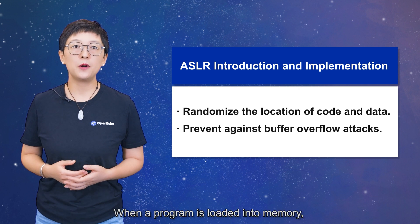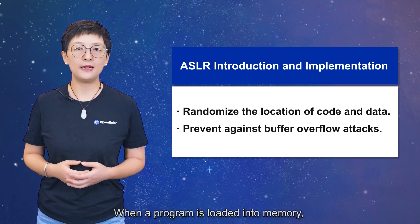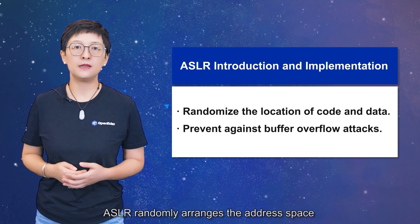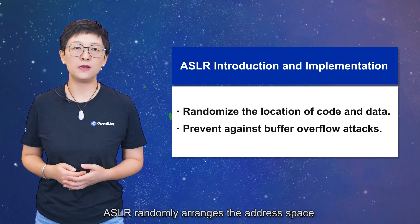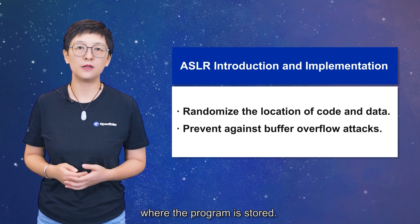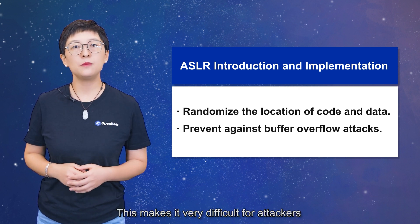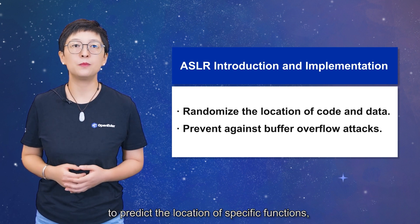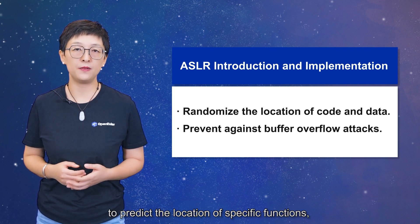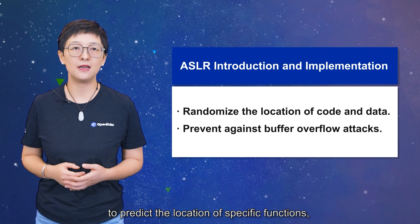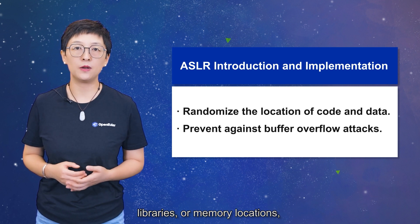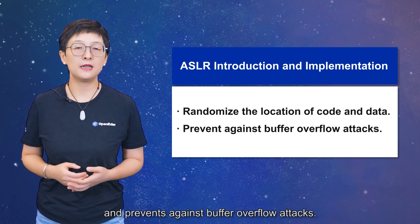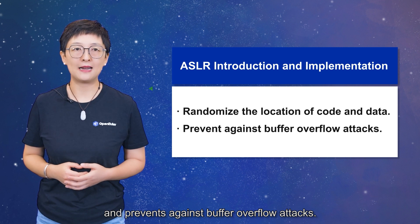When a program is loaded into memory, ASLR randomly arranges the address space where the program is stored. This makes it very difficult for attackers to predict the location of specific functions, libraries, or memory locations, and prevents against buffer overflow attacks.